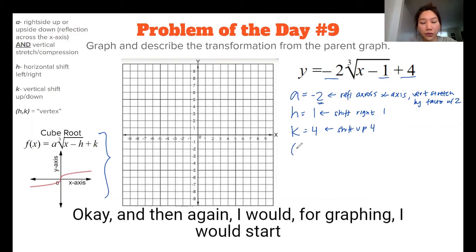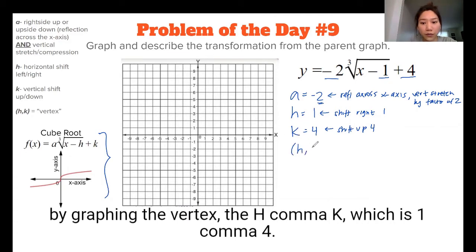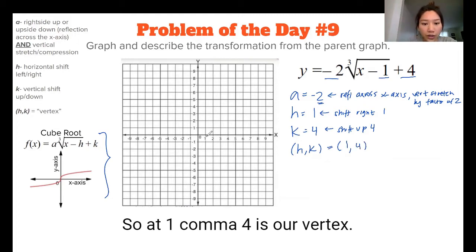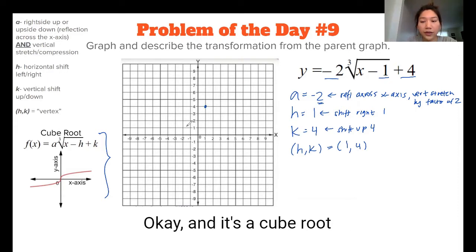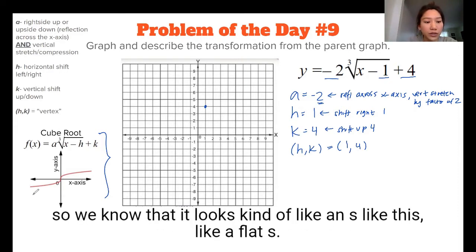And then again, I would, for graphing, I would start by graphing the vertex, the h comma k, which is 1, comma, 4. So at 1, comma, 4 is our vertex. And it's a cube root, so we know that it looks kind of like an s like this, like a flat s.